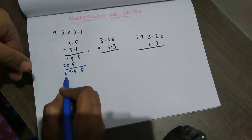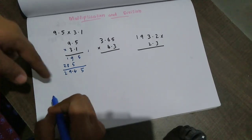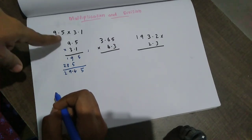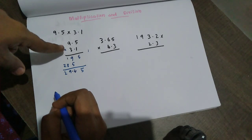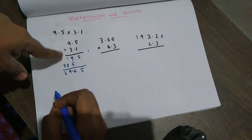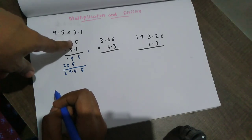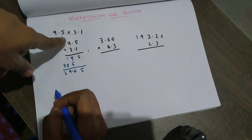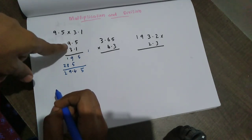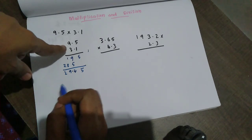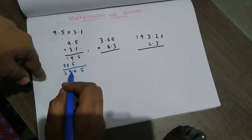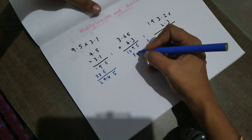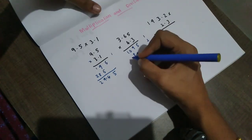The answer is 29.45. When we multiply, the decimal point placement depends on how many total decimal digits there are. Count the total number of decimal places — that is the count for placing the decimal point in the answer.